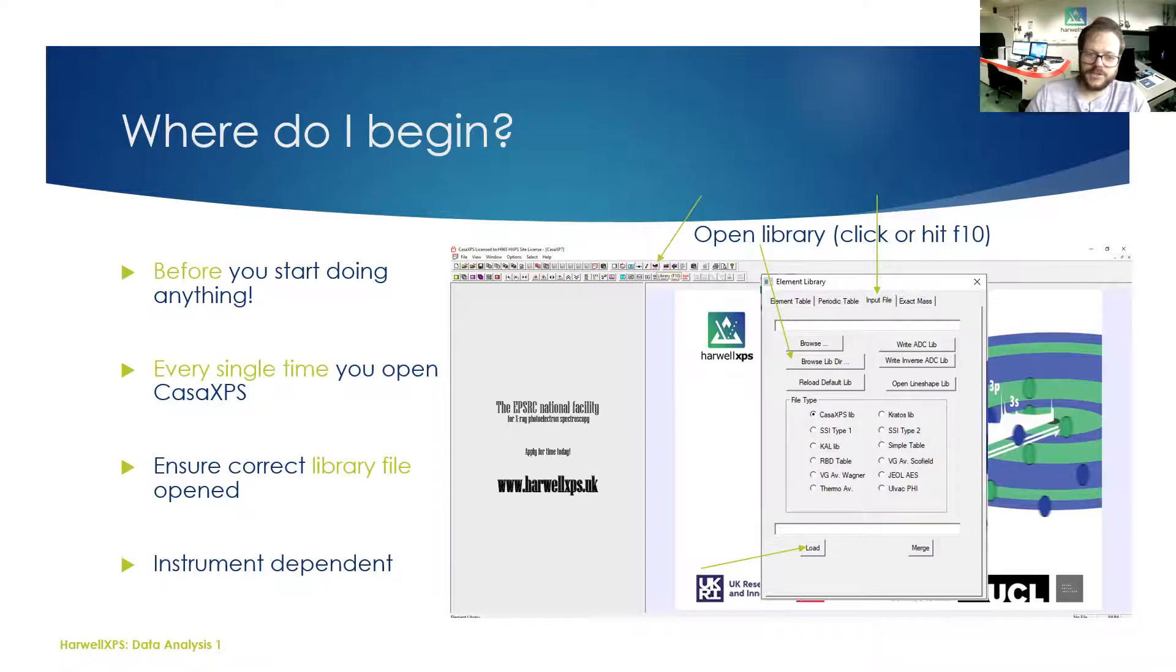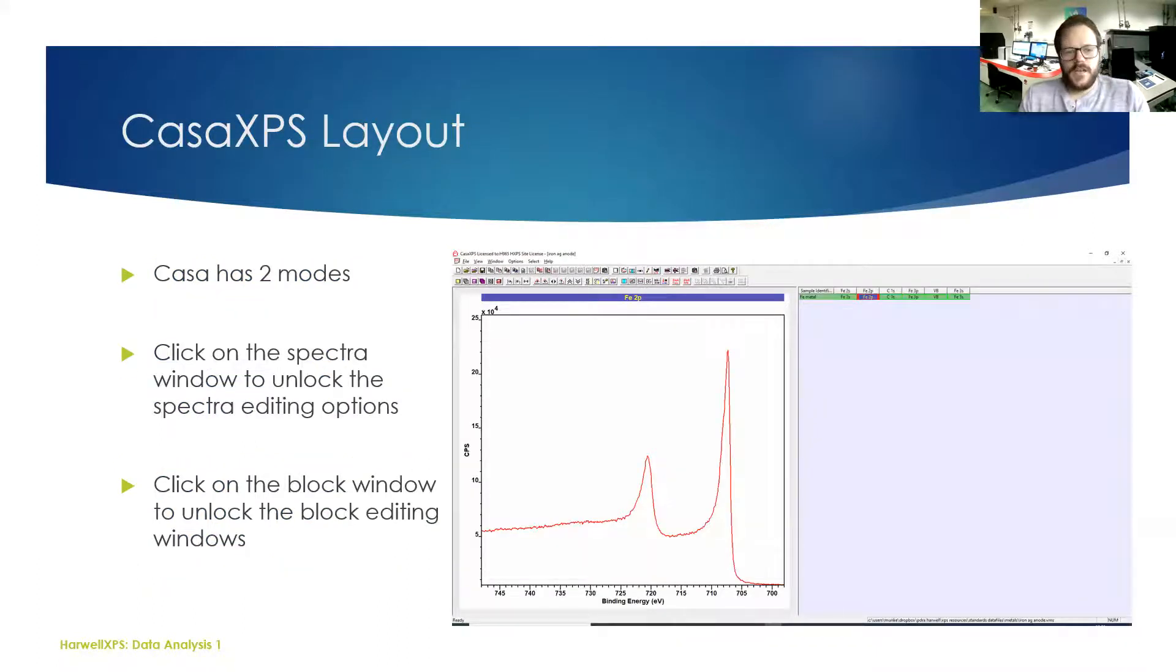A quick word on just the general layout of Casa. It's got two modes of operation, and depending on where you click on the main screen, that will change the mode of operation. If you click anywhere on the spectra, that opens up all of these options here. Then some of those to the right are grayed out, whereas if you click on this side on the right-hand side, you will then make those options available and the ones to the left will be grayed out.